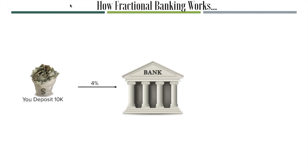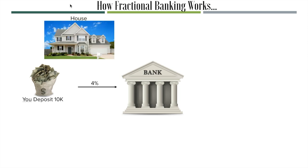Let's pretend you've deposited ten thousand dollars into the bank, and the bank is generous and gives you four percent for keeping your money there. Remember: if you deposit one dollar, the bank can lend ten dollars. So if you deposit ten thousand dollars, the bank can lend ten times that amount — now ten thousand dollars becomes one hundred thousand dollars worth of capital the bank can lend out. They take your deposit and lend it to someone who comes in and says, 'I need a mortgage.'